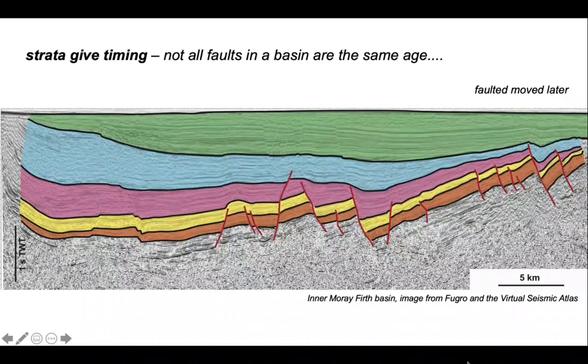The strata give us timing of faults and you can notice in this basin not all the faults are the same age. On the right hand side of the diagram, which is the fault structure we were just looking at, you can see that we have a blue synrift package that has dropped into the half graben on that fault, whereas elsewhere the blue seems to seal quite a lot of the faults. So strata give timing on the faulting.